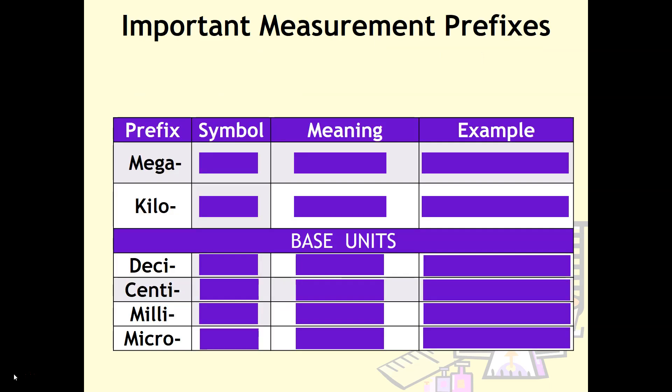There are some important measurement prefixes you need to know. Before we get into those, remember we can modify base units by using prefixes. Base units in chemistry include grams for measuring mass, liters for measuring the volume of liquids, and meters for measuring length. As I mentioned, we can modify these base units by attaching prefixes.